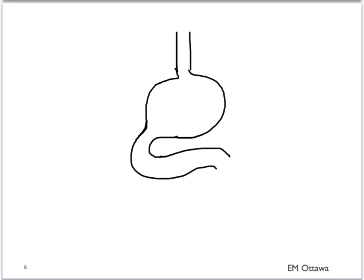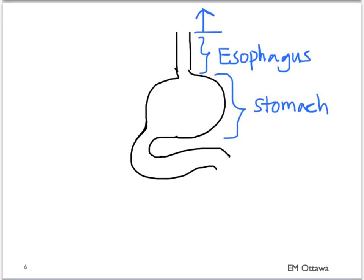To look at the causes of upper GI bleed, we will look at it anatomically. It includes bleeding from proximal to the esophagus, bleeding from the esophagus, bleeding from the stomach, and bleeding from the duodenum. Let us look at how each of them might present.